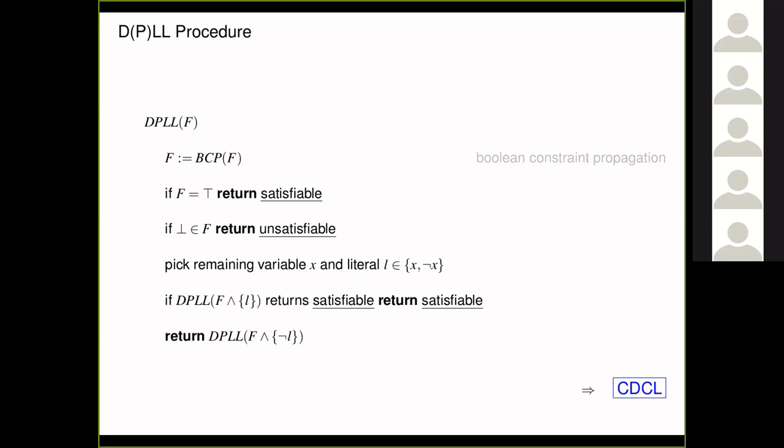The problem with the DP procedure is it explodes in space because the number of resolvents is quadratic. That's why in the 1950s they came up with the recursive DPLL algorithm, which adds Boolean constraint propagation (BCP). If the formula isn't resolved yet, you pick a variable still occurring, then call the procedure recursively once with that literal set true and once with its negation. If both calls are UNSAT, the whole problem is UNSAT; if one is SAT, you're done. For example, with a formula of all eight clauses over three variables — each ruling out exactly one assignment — DPLL would make decisions, propagate by BCP to derive forced assignments, detect conflicts, and backtrack.